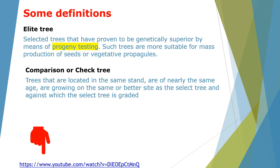Another important concept is the comparison or check tree. Remember, a candidate tree is one we selected in the forest just by looking at it and considering it the best option. A comparison tree is used to compare against those selected trees — they are almost the same age, located in the same stand, and growing under the same or similar site conditions. The purpose is to compare your selected tree against others and decide whether it is truly better.